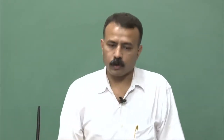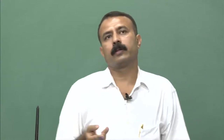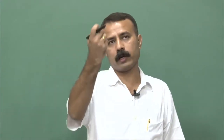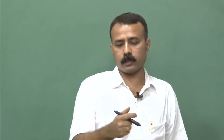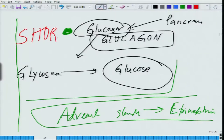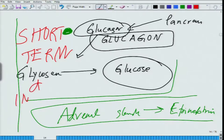In the second messenger pathway, the first messenger or hormone does not enter inside the cell. It just binds at the surface and the rest is all a cascade of reactions taking place inside the cell. This second messenger pathway represents a short-term, instantaneous effect.